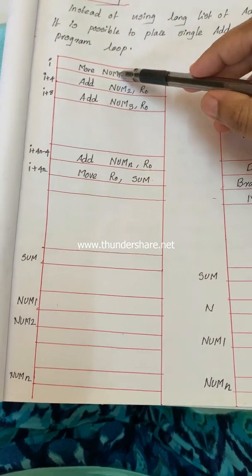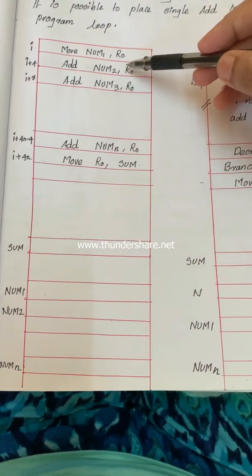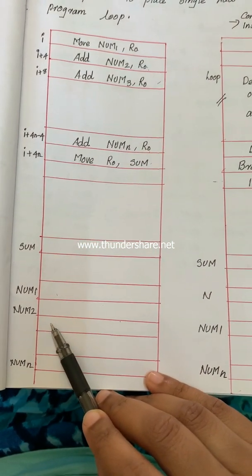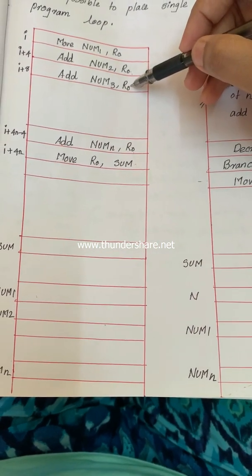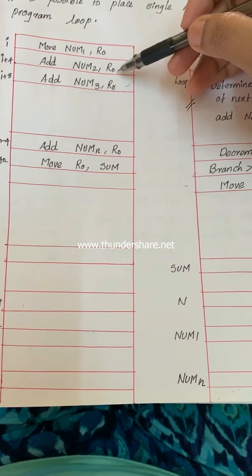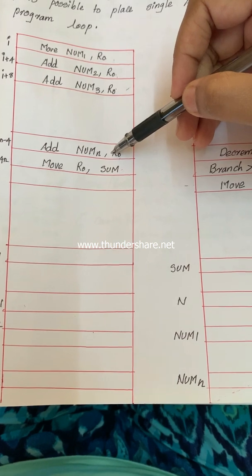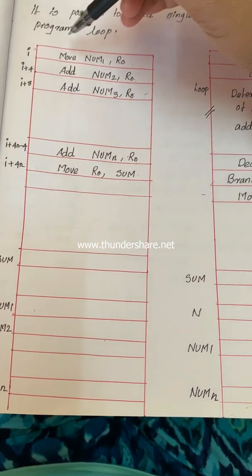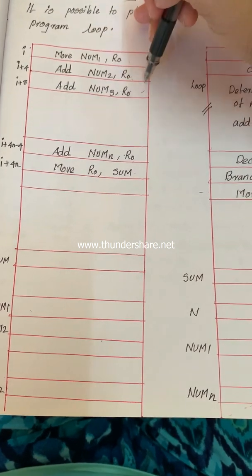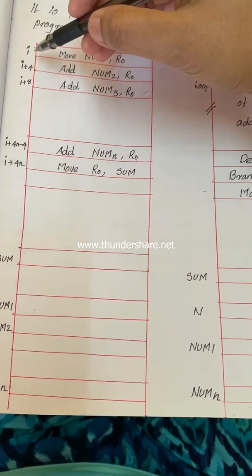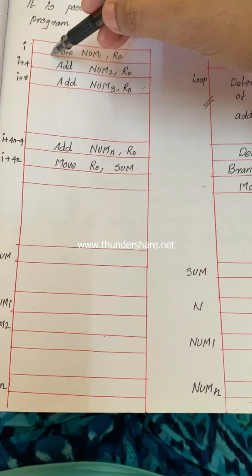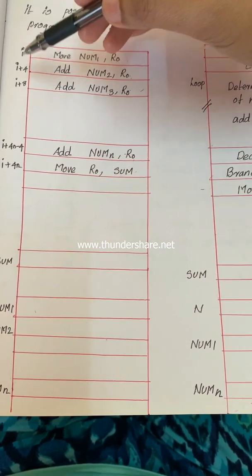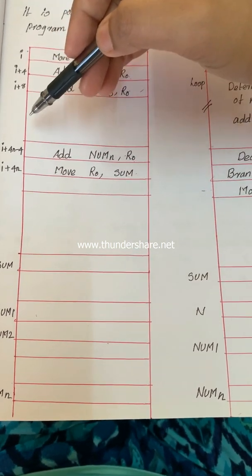R0 already contains the value at number 2; store the resultant value in R0. Then execute the next instruction: take the value from memory location number 3, add it with R0, and so on — performing all additions in sequential order, with the program counter incrementing automatically one after another.